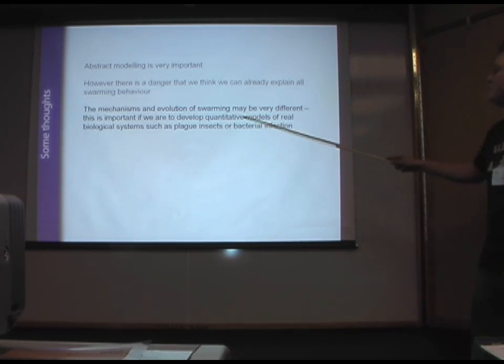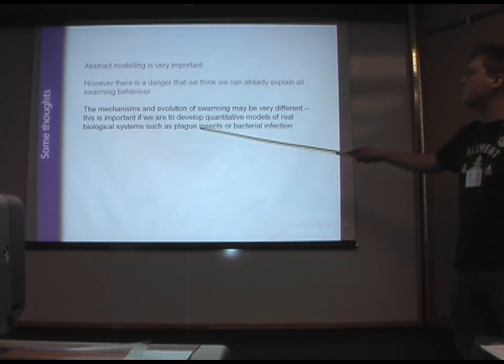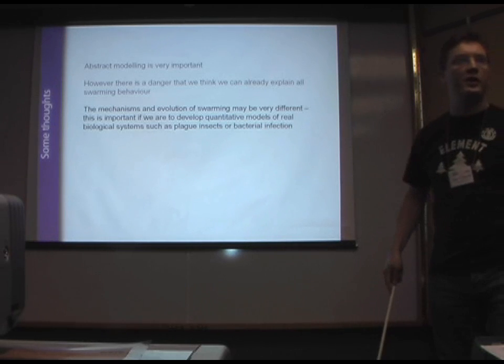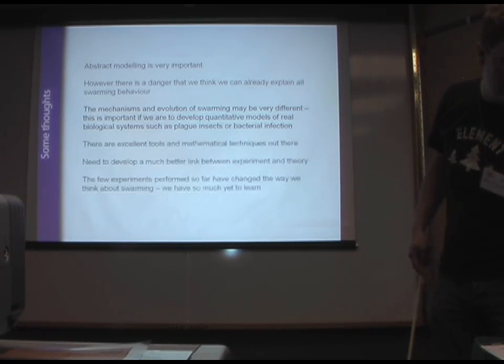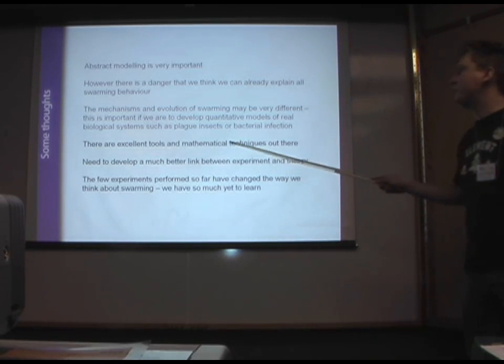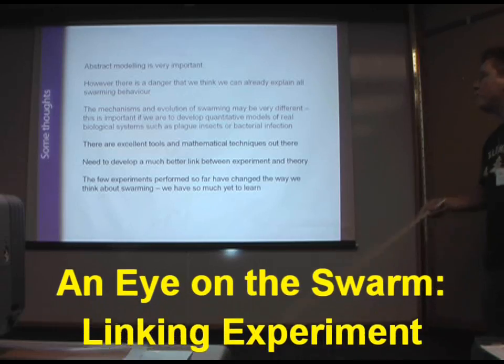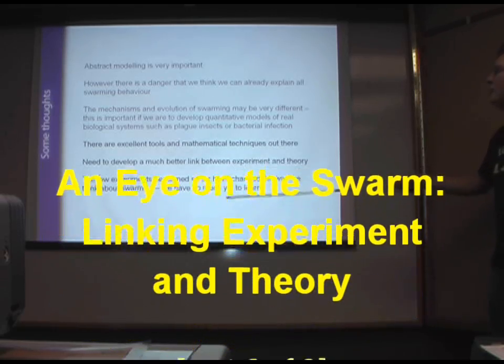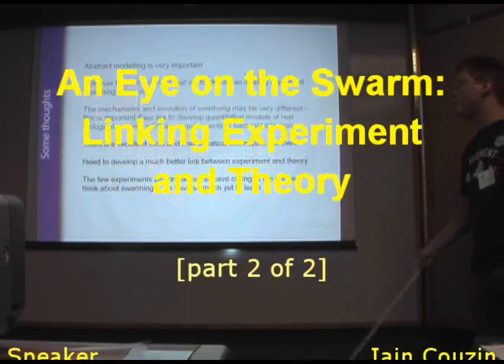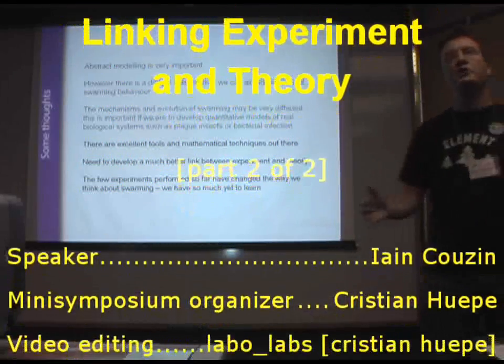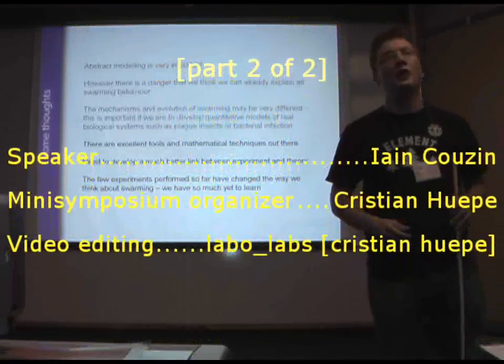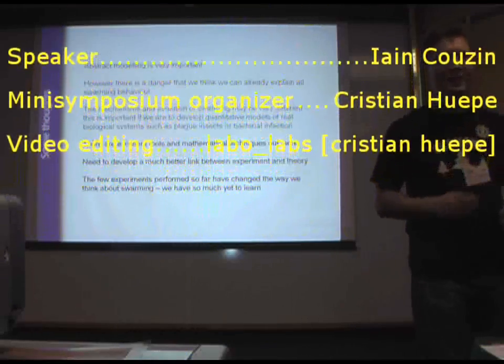We do have to understand this if we're going to develop quantitative models of real systems, such as bacterial infection, plague insects. We do have to look at the biology. There are excellent mathematical tools out there. And I think it would be really, really good for us to think of a constructive way that we could begin to link together experiments in theory. Because the very few experiments that have performed so far have completely changed the way we look at these systems. And that's really all I have to say. Thanks very much.